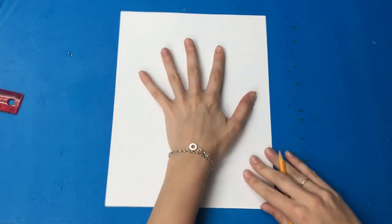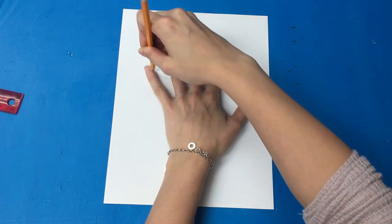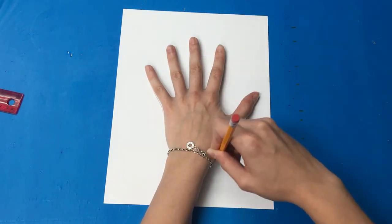Start off by placing your hand on the paper and tracing it with the pencil. You may need a friend or an adult to help you do this.